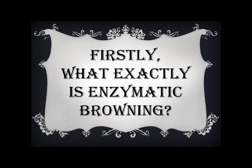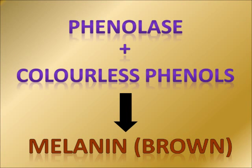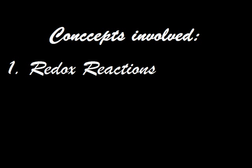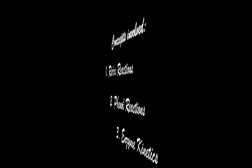Enzymatic Browning occurs when plant tissue is exposed to air, resulting in a brown coloured pigment, melanin, being formed. Phenolases, which are enzymes found outside the cell wall, come in contact with colourless phenols which are found inside the cell, causing the brown colour to appear. This process involves concepts of redox, phenol reaction and enzyme kinetics.